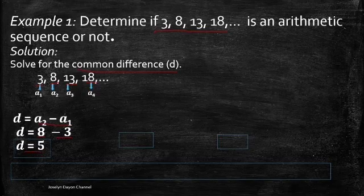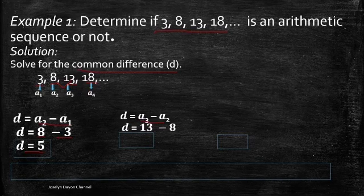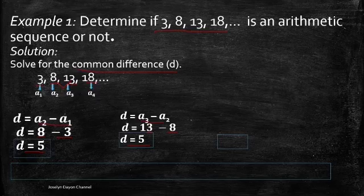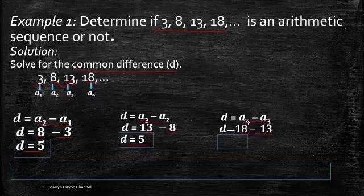So the common difference is equal to 5. We also check the difference between a₃ and a₂: substituting, 13 minus 8 gives a difference of 5. Next, we check the difference between the fourth term and the third term: substituting, 18 minus 13, and the answer is also 5.